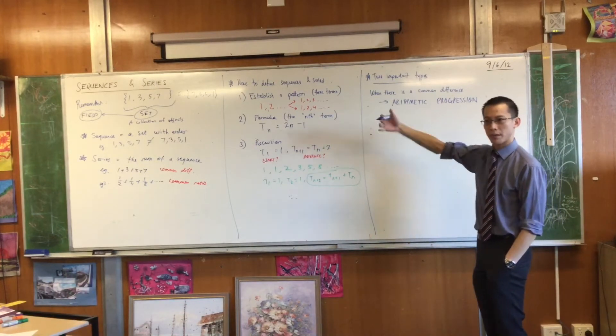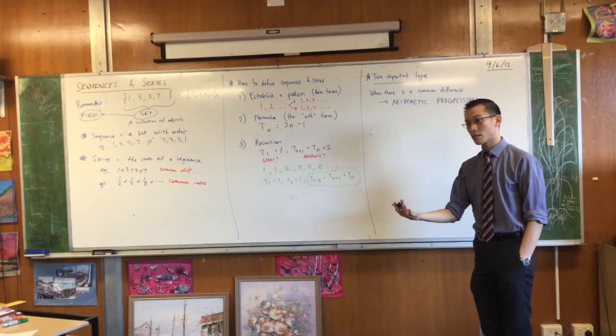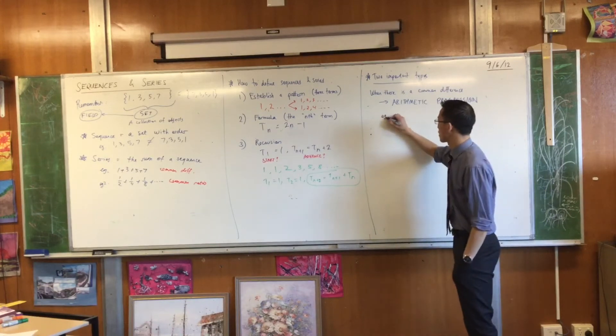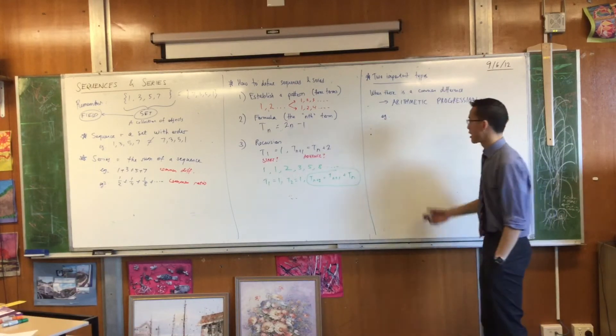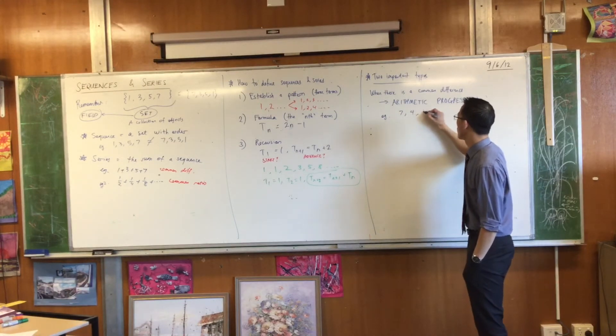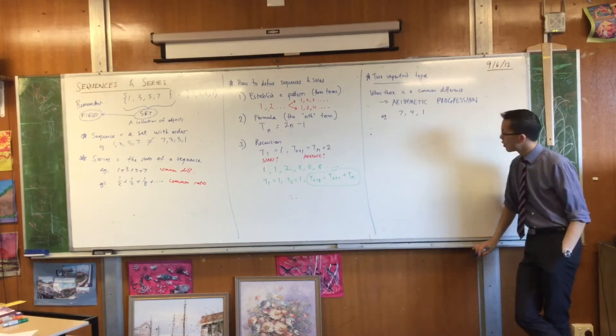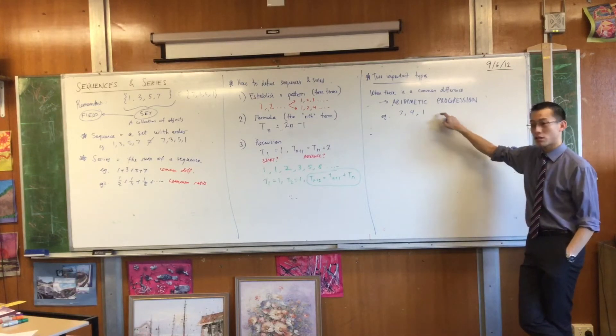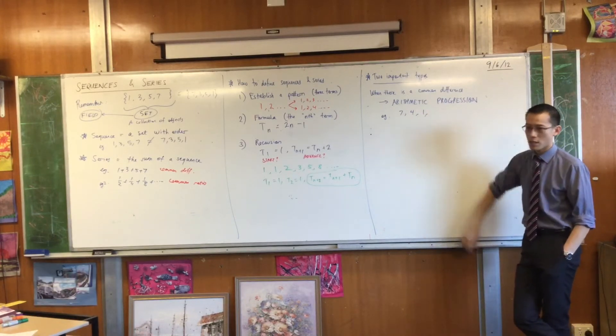A lot of the ones that we've been looking at, they get bigger and bigger. But you can get ones that get smaller and smaller. So for example, let's go with something like 7, 4, 1. So this is three terms. I've established a pattern. I could say dot, dot, dot, but can you tell me what the next term will be?